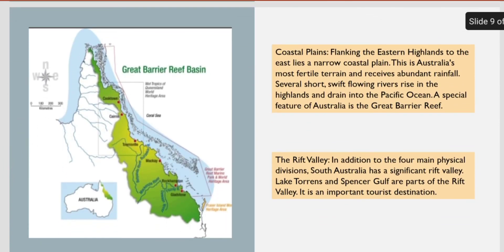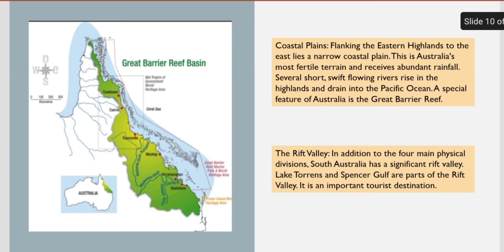Next, Coastal Plains. Flanking the Eastern Highlands to the east lies a narrow coastal plain. This is Australia's most fertile terrain, favorable for agriculture, and this area receives abundant rainfall. Several short, swift-flowing rivers rise in the highlands and drain into the Pacific Ocean. A special feature of Australia is the Great Barrier Reef.